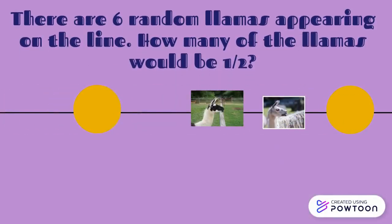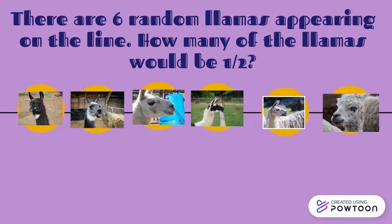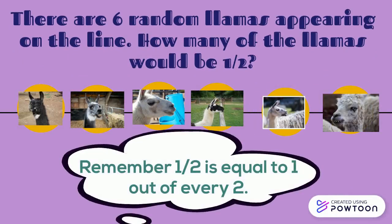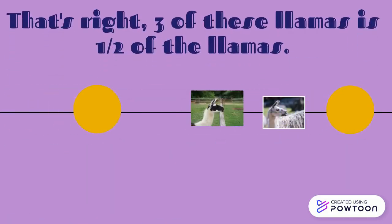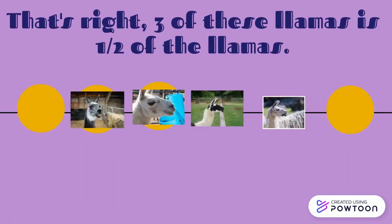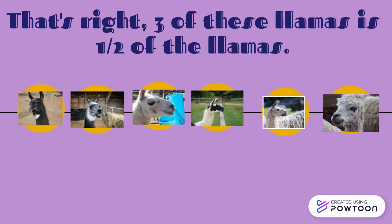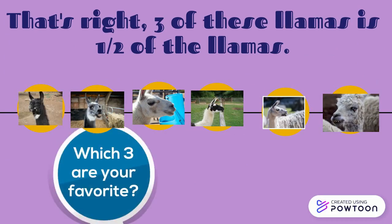There are six random llamas appearing on the line. How many of the llamas would be one half? Remember, one half is equal to one out of every two. That's right — three of these llamas is one half of the llamas. Which three are your favorite?